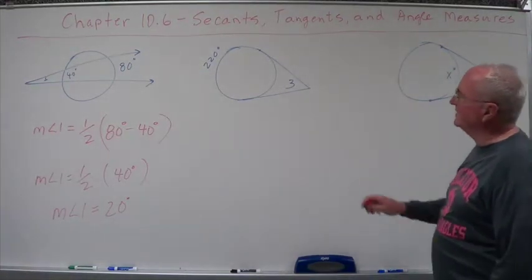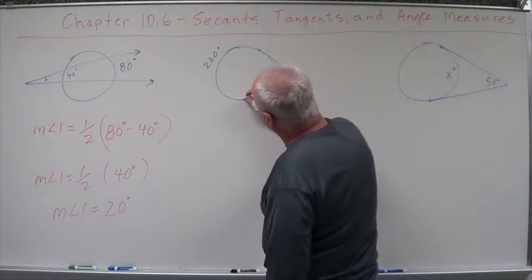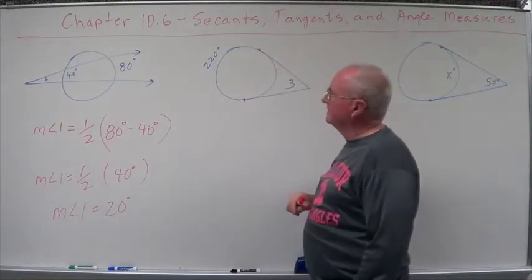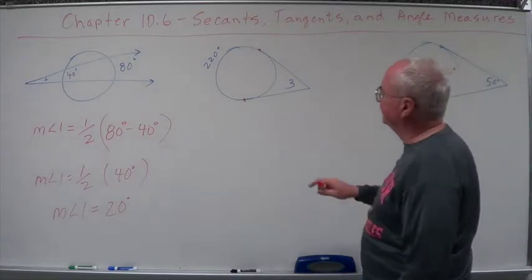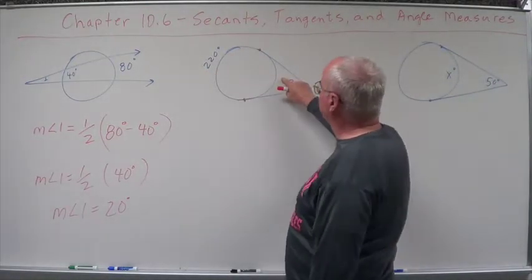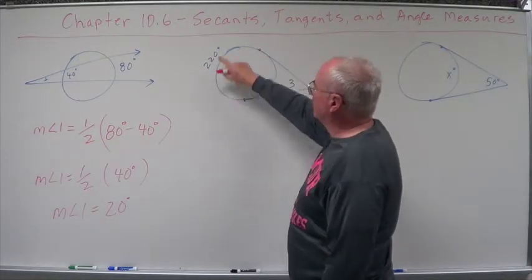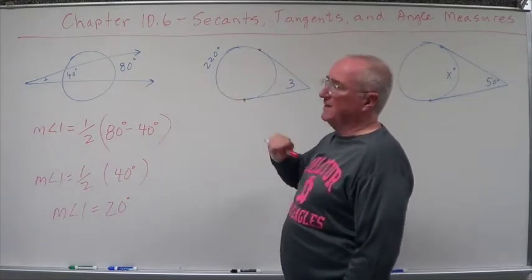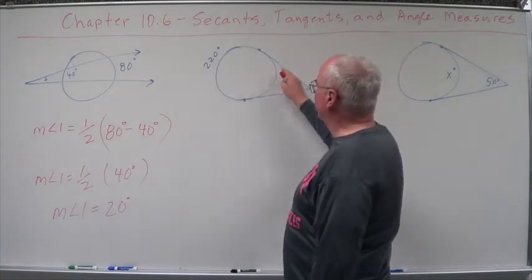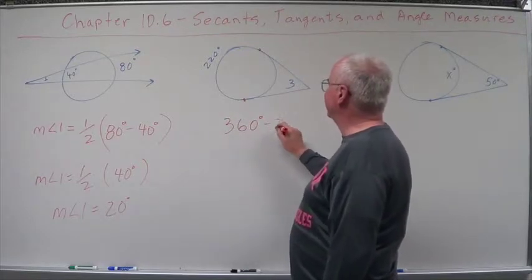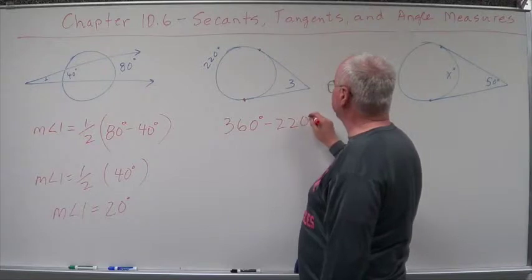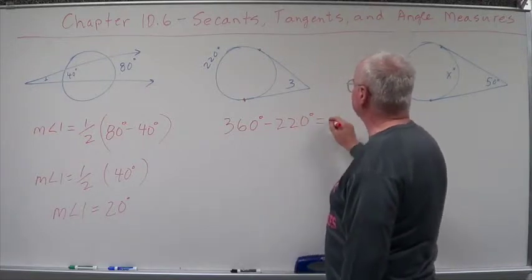Now, let's look at this second one. We've got two tangents that are intersecting on the outside of the circle. And we want to find angle three. We know this one, we don't know this one. Well, it's a whole circle, isn't it? And we only have two arcs because they're tangents. We have this arc and we have this one. So, what's the other arc? Well, we know the whole circle is 360. So, the other arc has to be that which is 140.